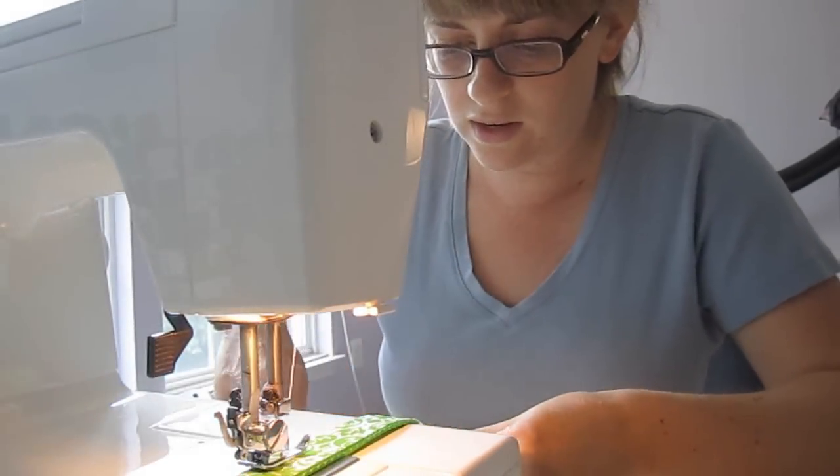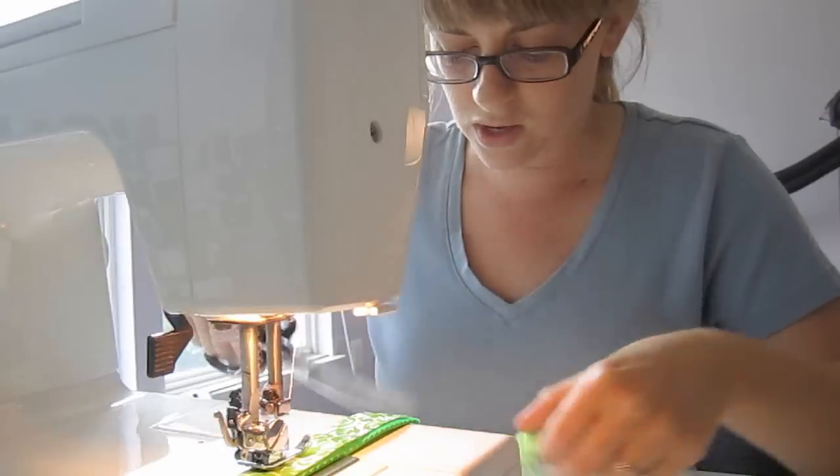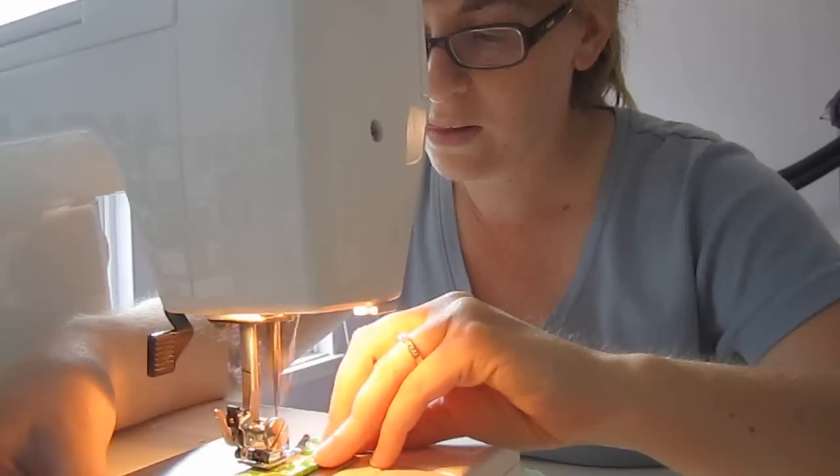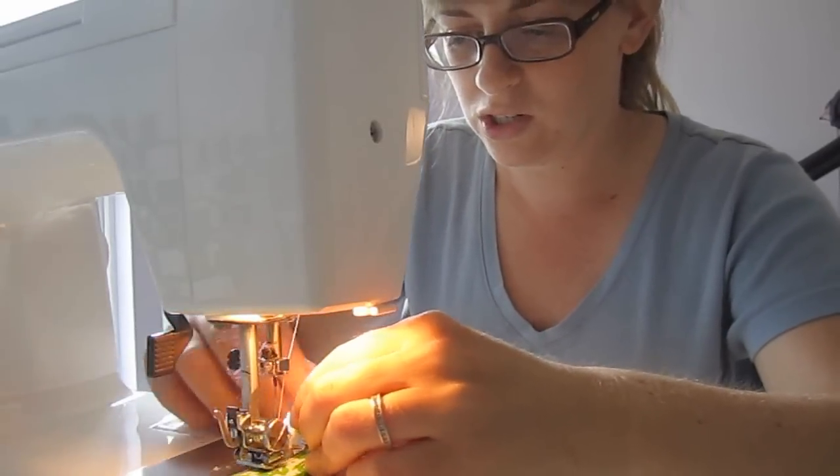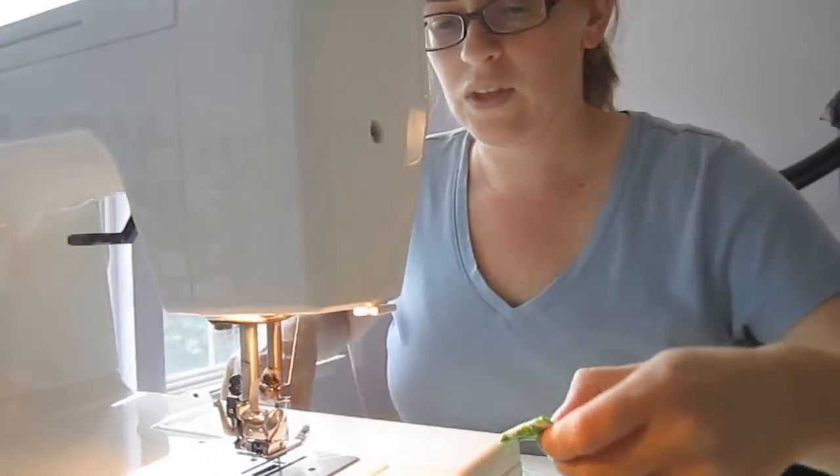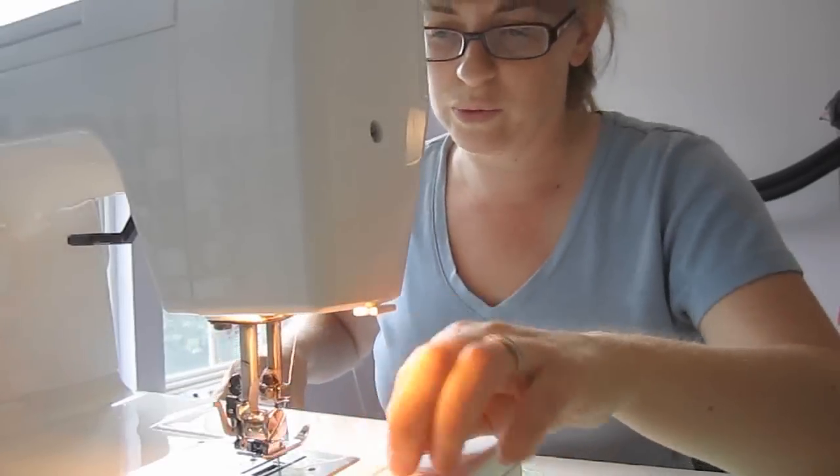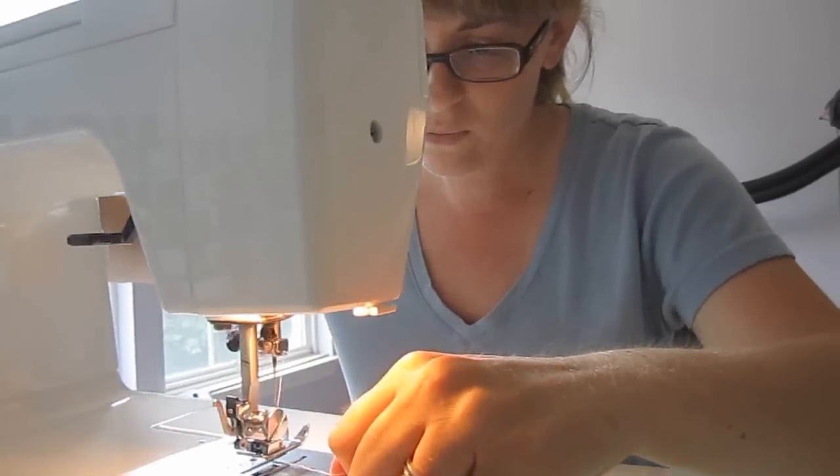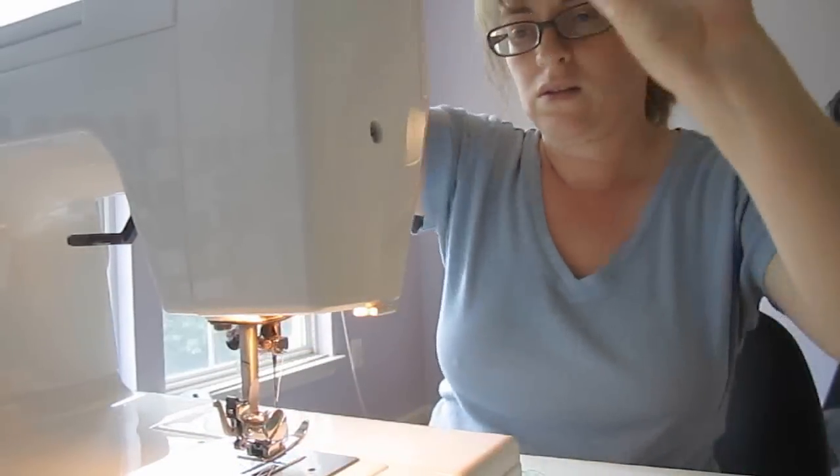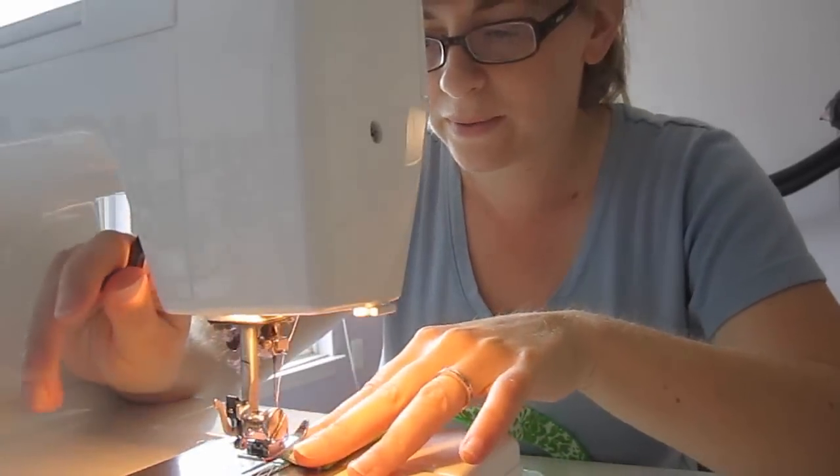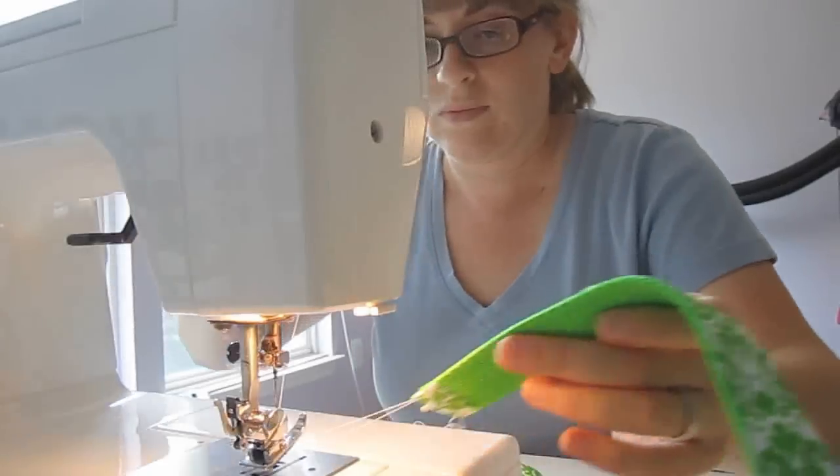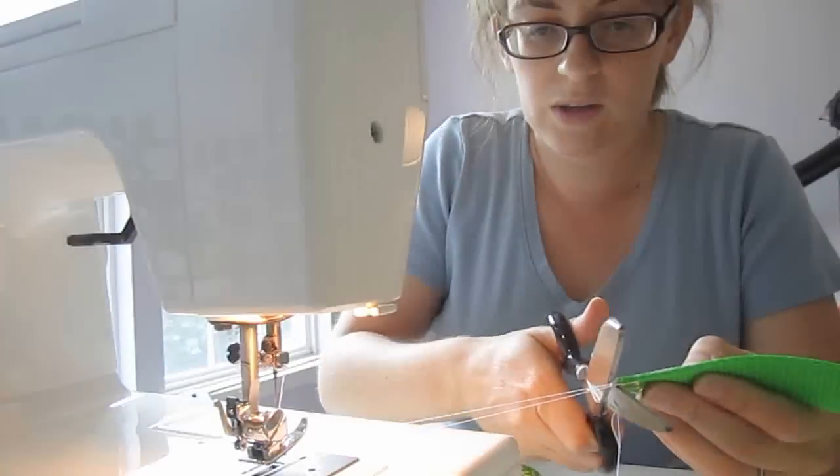When you get close to the end, cut a little bit longer than the webbing so that you have enough to fold it under. Don't worry about frayed edges. You can run the collar through the wash like a hundred times and the ribbon won't fray. We'll do the other side. Alright. Clip your threads.